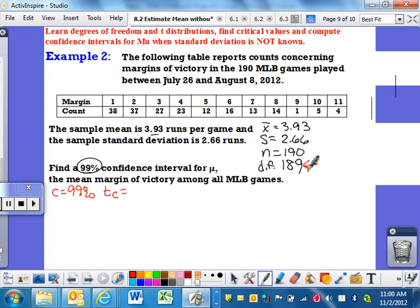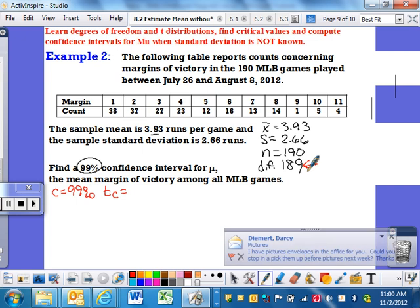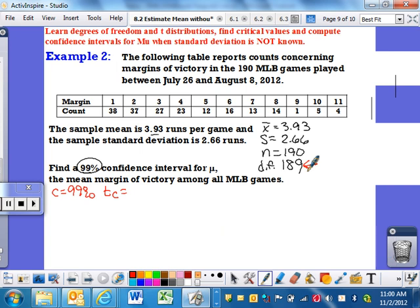You're going to find that that number is not on your table. So there's a little note on the very bottom of this table. It says, for degrees of freedom not on the table, use the closest one that is smaller. So you need to go, what's the smallest number? The next closest number to 189, that's smaller than it, is 100. So you're actually going to look at the degrees of freedom of 100 on this problem, and over to the 99% confidence column, which then your critical value is going to be 2.626. So that's how you go about finding your critical value.